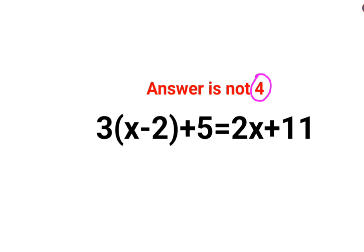Okay, so first thing is we have a 3 with this bracket. Let's open this. So we have 3x minus 3 gets multiplied with this 2 which is minus 6 plus 5 equals to 2x plus 11.